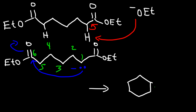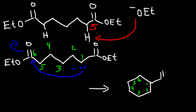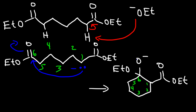Let's call this carbon 1, 2, 3, 4, 5, and 6. Attached to carbon 1, we have an ester. Attached to carbon 6, we had a double bond between the carbon and the oxygen atom, and now we're going to have a single bond with the oxygen bearing a negative charge, and we still have the OEt group. In the next step, the oxygen will use one of its lone pairs to reform a pi bond and kick out the ethoxide ion.